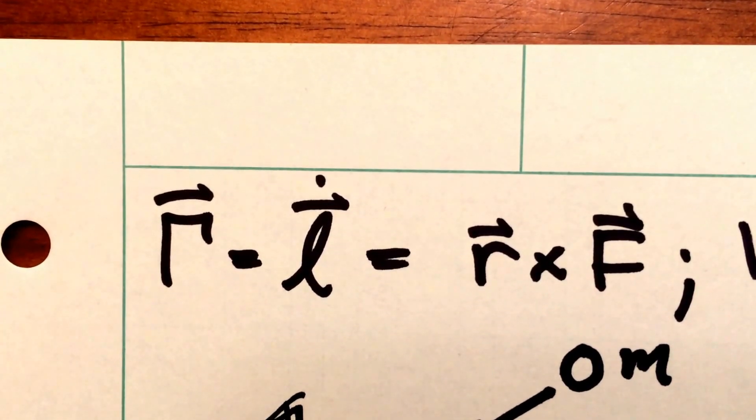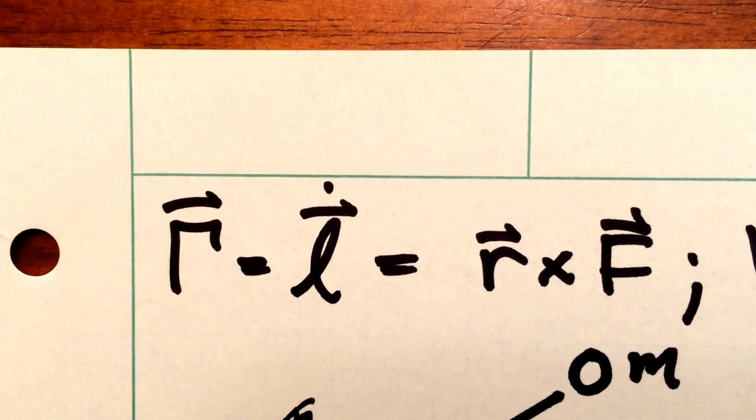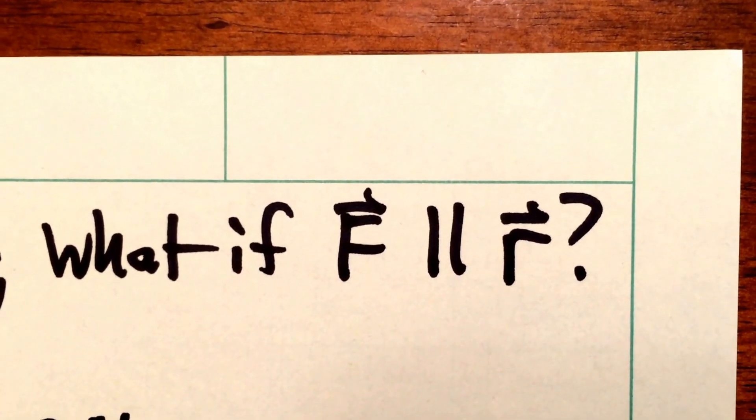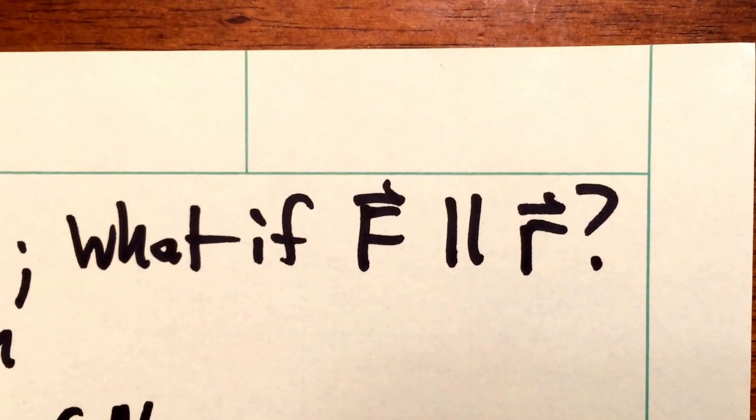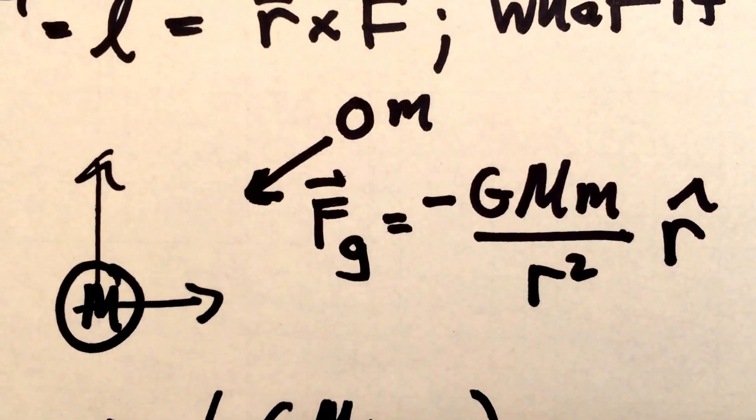But the angular momentum can still remain conserved. So recall our definition for torque, capital gamma vector. Of course, that's little l vector dot, and that's r crossed into f. What if we have a non-zero force that happens to run parallel to the position vector? A good example of such force might be the force of gravity.